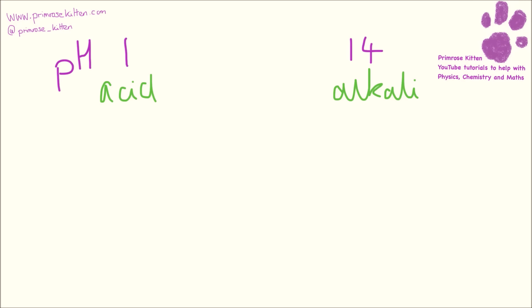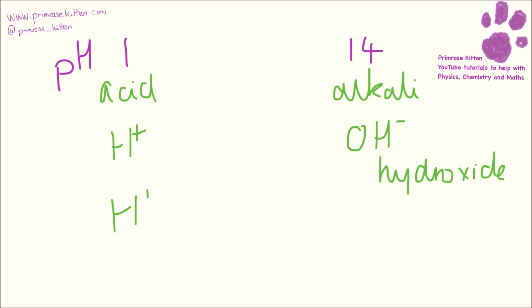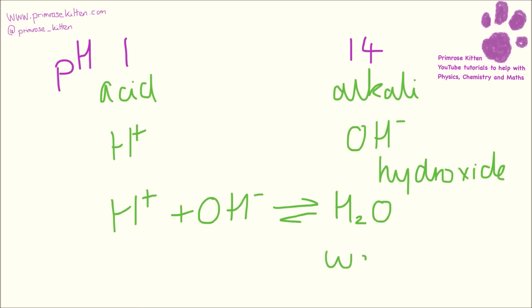On the pH scale, 1 is something that is very acidic and 14 is something that is very alkali. Acidity comes from hydrogen ions and alkalinity comes from hydroxide ions. What we get is hydrogen ions plus hydroxide ions turning into water, which is neutral. This comes up a lot, so you should definitely learn that equation — it's lovely and simple.